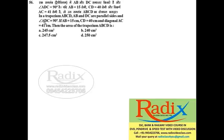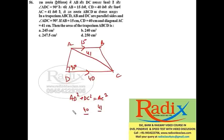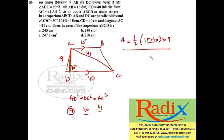Next: In trapezium ABCD, AB and DC are parallel sides, angle ADC is 90°, AB = 15, CD = 40, and diagonal AC = 41. Applying Pythagoras: AD² + DC² = AC². Since 40 and 41 are part of a 9-40-41 triplet, AD = 9. Area of trapezium = half × sum of parallel sides × height = (1/2)(AB + DC) × AD = (1/2)(50 + 40) × 9.